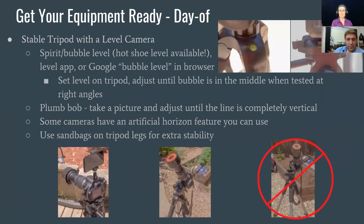For the actual Mega Movie, we need to minimize rotation in the image because we need to automate a lot of the processing. What we're asking people to do is make sure the base of their camera is level. A lot of tripods come with bubble levels built in — make sure both the legs and the platform the camera attaches to are level to the ground.